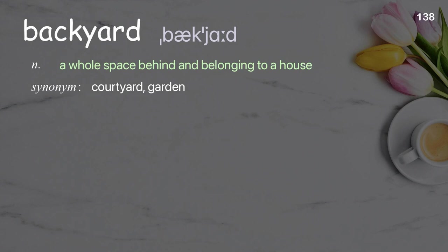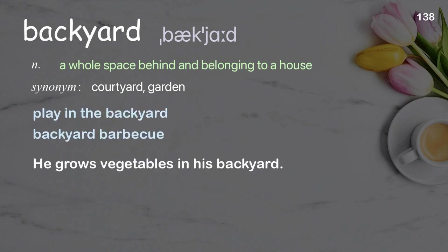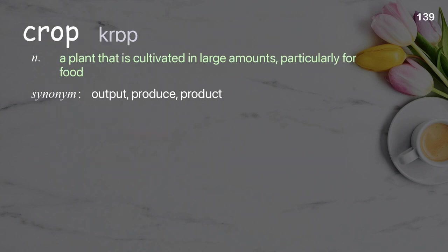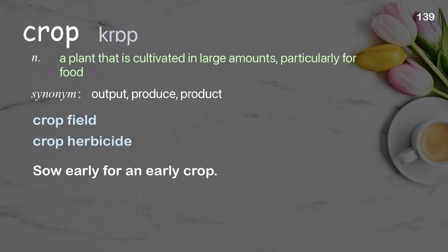Backyard: a whole space behind and belonging to a house. Examples: play in the backyard, backyard barbecue. He grows vegetables in his backyard. Crop: a plant that is cultivated in large amounts, particularly for food. Examples: crop field, crop herbicide. Sow early for an early crop.